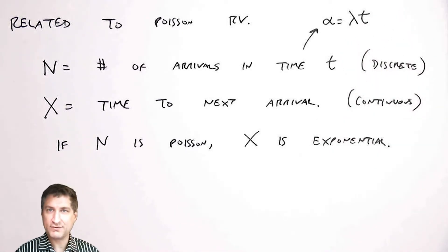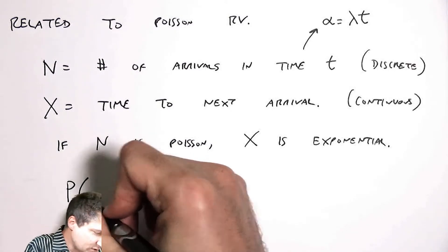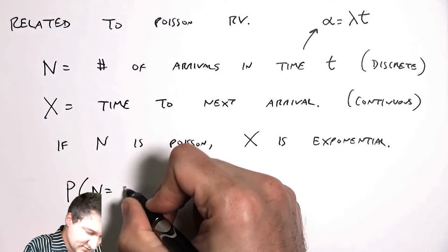Lambda is kind of like the average arrival rate in packets per unit time. So I could ask what's the probability that N equals 0?